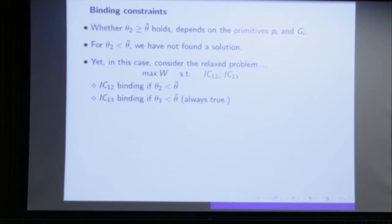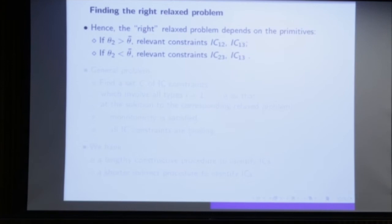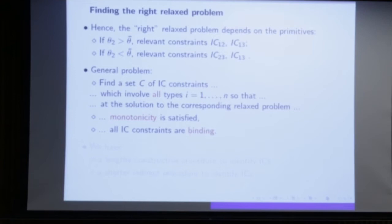In general, we want the result for n types, not just two, three, four, or five. We eventually wrote a lengthy constructive proof by induction — about 40 pages, with three or four nested inductions. We then thought further and found a much shorter indirect procedure to identify the binding incentive constraints.